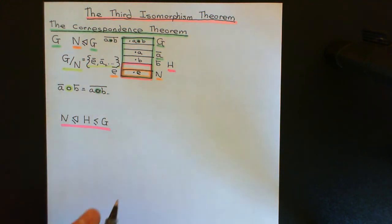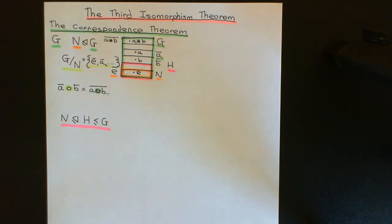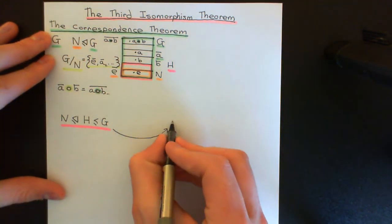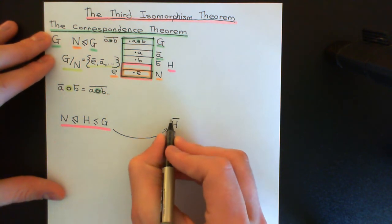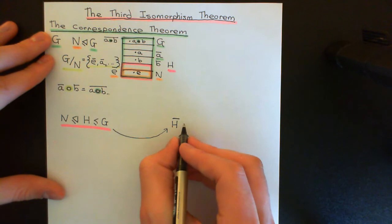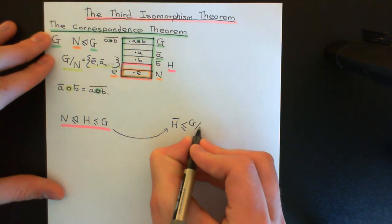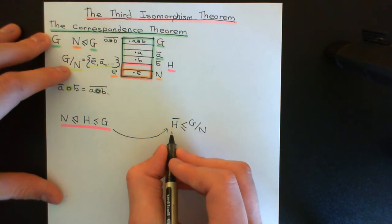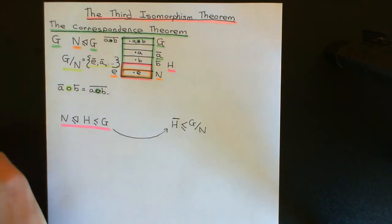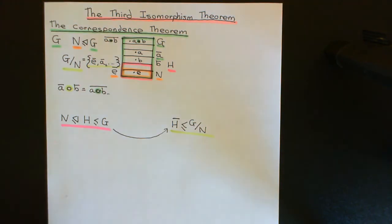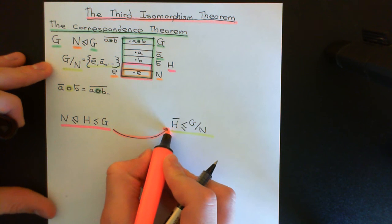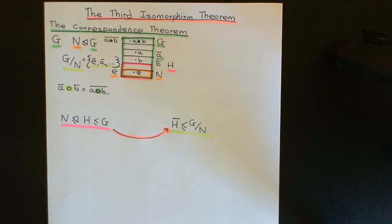The correspondence theorem says this subgroup H of G that contains N corresponds to a subgroup H-bar in the quotient group G/N. Using bar notation for everything in the quotient group, I can find a corresponding subgroup H-bar of G/N. So from a subgroup of G that completely contains the normal subgroup, there is a very natural corresponding subgroup of the quotient group G/N.